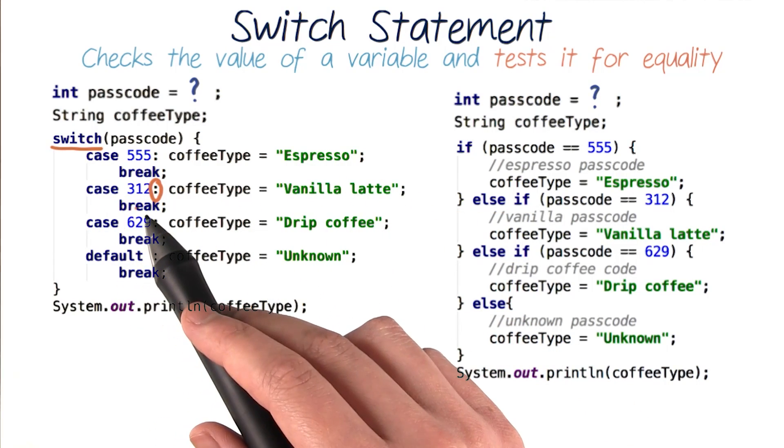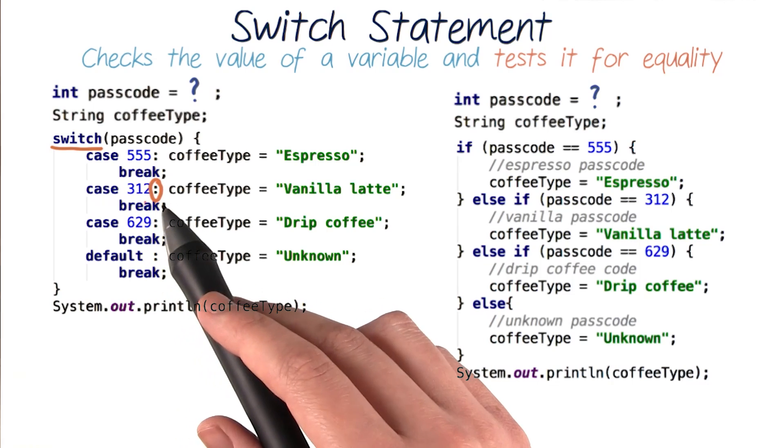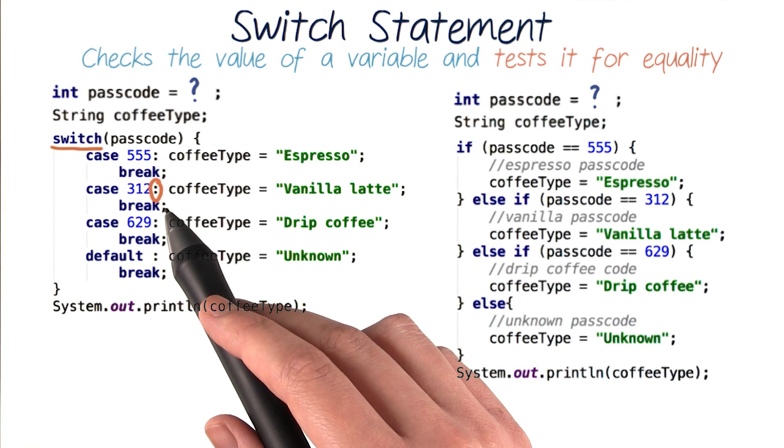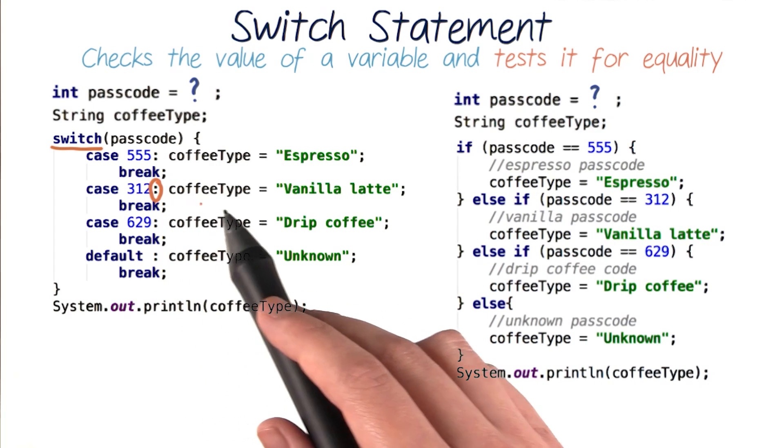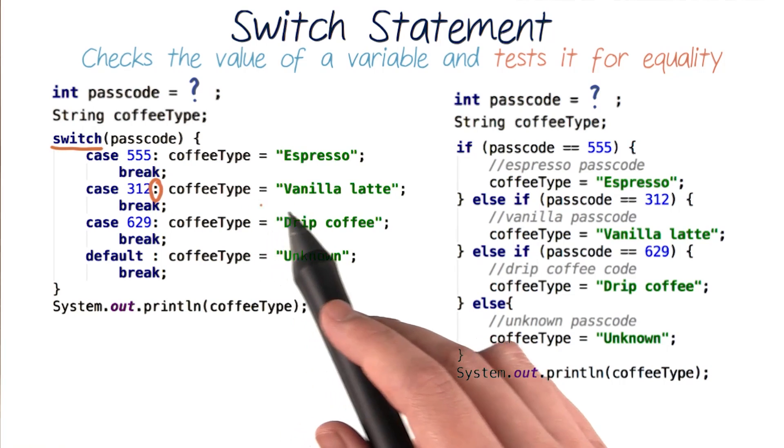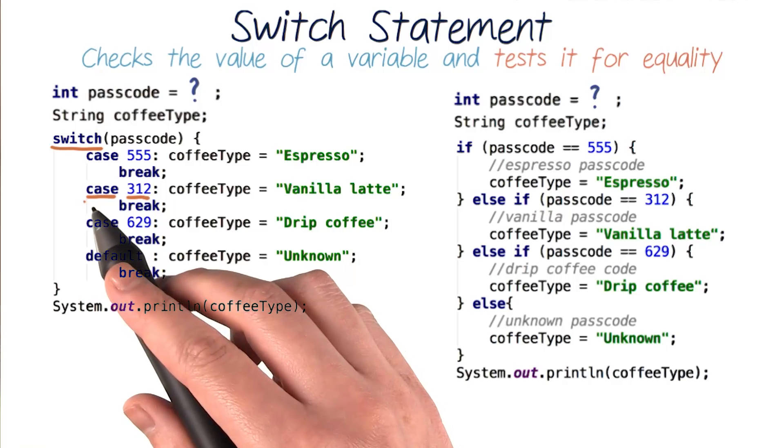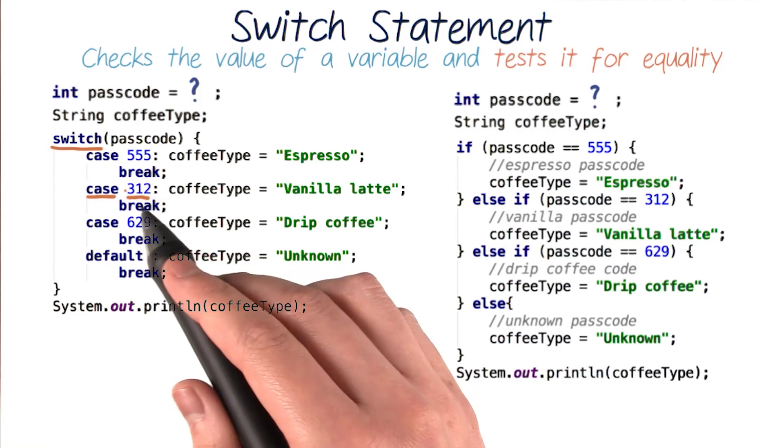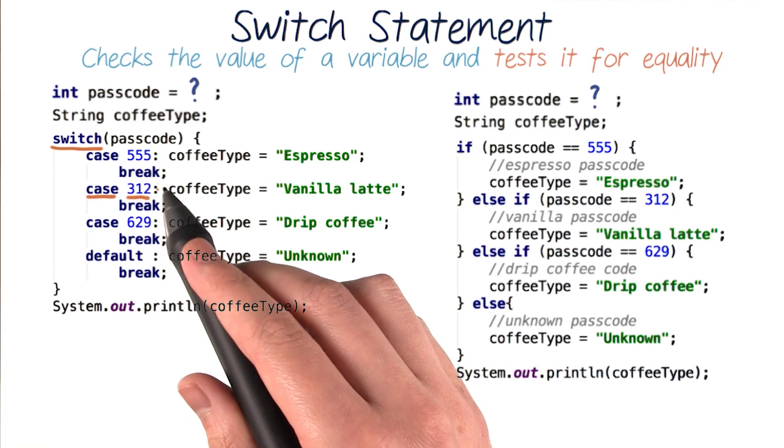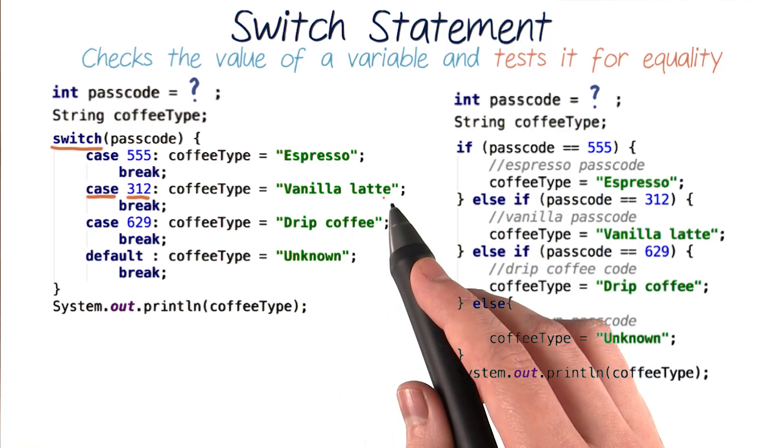Notice that after each case is defined, like case 312, we write a colon, not a semicolon. And then the instructions we want our program to execute, which is to give a certain value to our coffeeType string. And this is the format for all our cases: the word case, the specific value we want to check for equality, a colon, and then the code we want to execute.